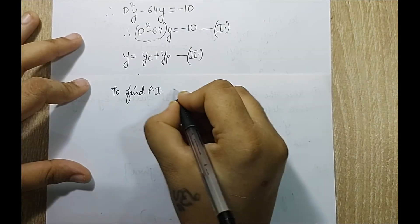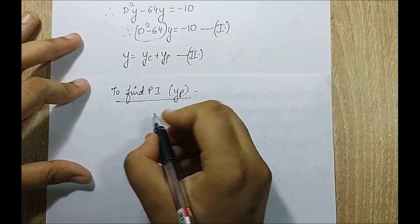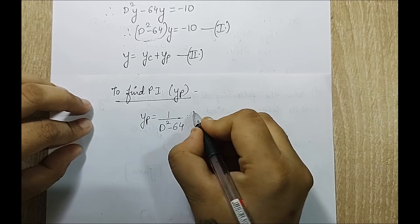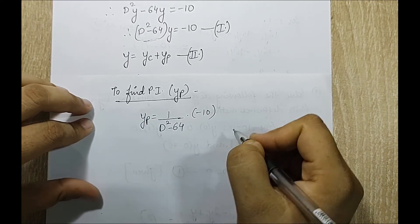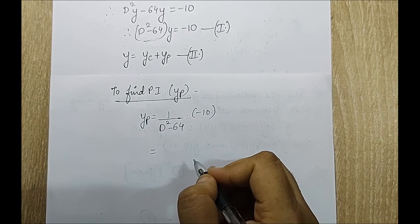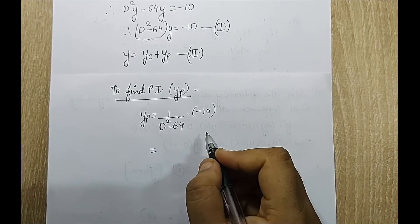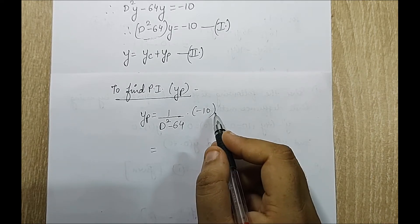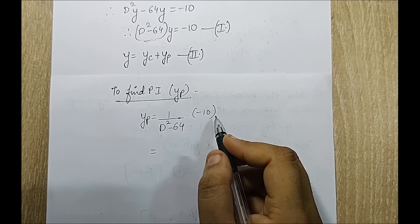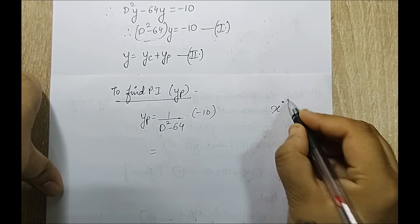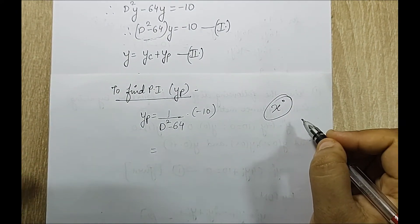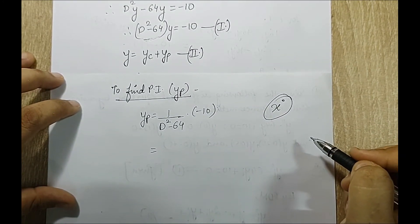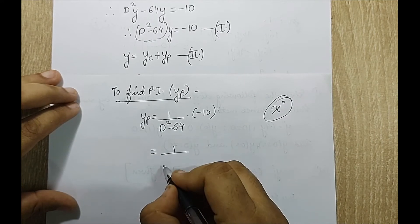To find the particular integral yp, I write: yp equals 1/(D² minus 64) times (minus 10). This is the first type where φ(x) is in the form x^m. Here the right-hand side is minus 10, which is minus 10 times x^0 — the x^0 term is hidden. I take out minus 64 as a common factor from the denominator.